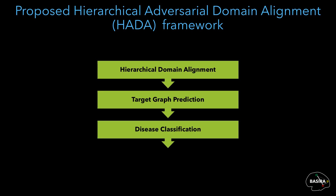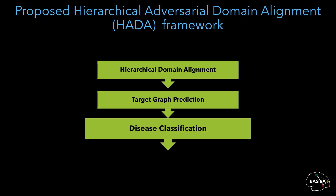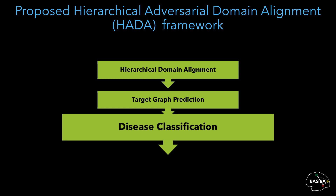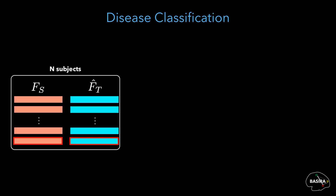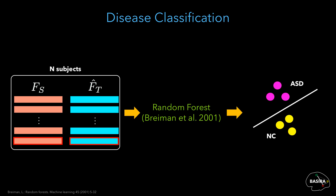In the last step of our HEDA framework, we propose to evaluate the reliability of our predicted target brain graphs for diagnosing neurological disorders. We concatenate horizontally the source and the predicted target feature vectors extracted by vectorizing our graphs, then use a random forest model to classify disordered and healthy subjects.